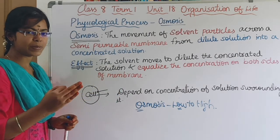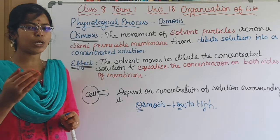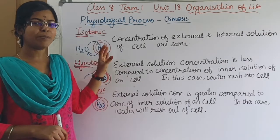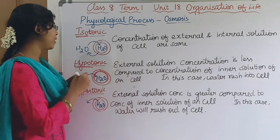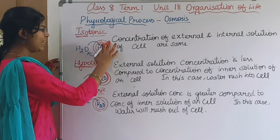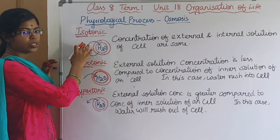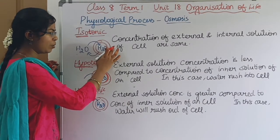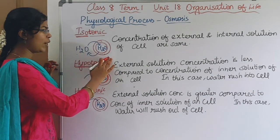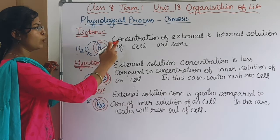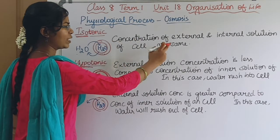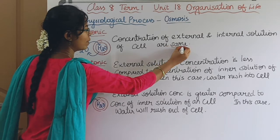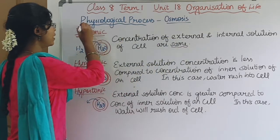There are three types of osmosis. First, isotonic. 'Iso' means the same. So in isotonic, the concentration outside the cell is the same as the concentration inside the cell.